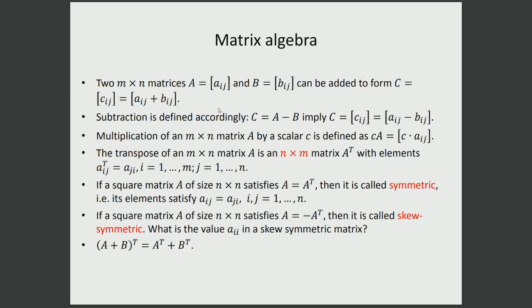We moved on to the basic arithmetic operations of matrices, in particular addition and subtraction. For those, we need to make sure the two matrices have exactly the same size — both must be m by n — otherwise we cannot perform these operations. For addition and subtraction we just go to corresponding elements and apply the operation. For scalar multiplication, we multiply each element of the matrix by that scalar.